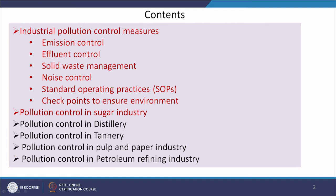Our content will cover industrial pollution control measures: emission control, effluent control, solid waste management, noise control, standard operating practices, and checkpoints to ensure environmental compliance. Then we will discuss pollution control in sugar industry, distillery, tannery, pulp and paper industry, and petroleum refining industry across five classes.